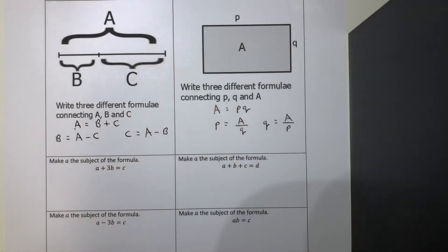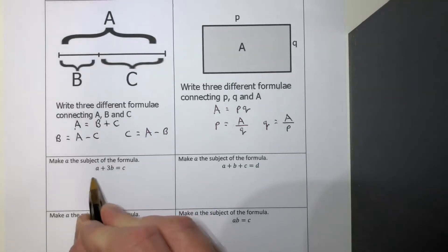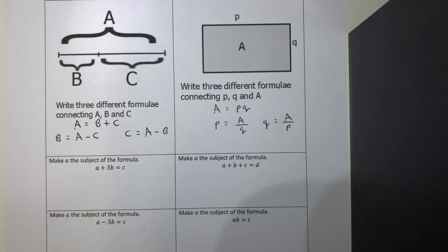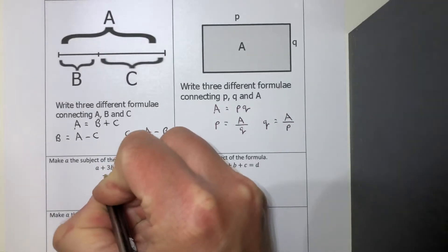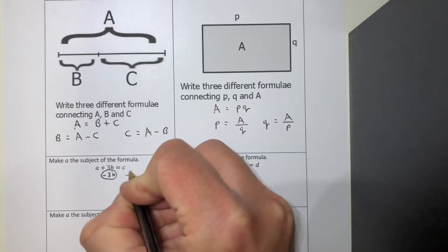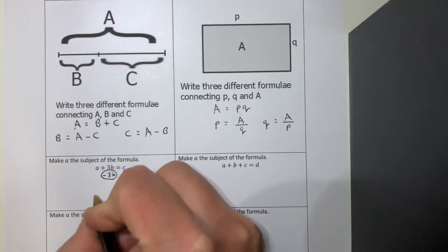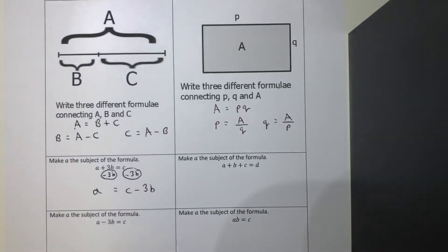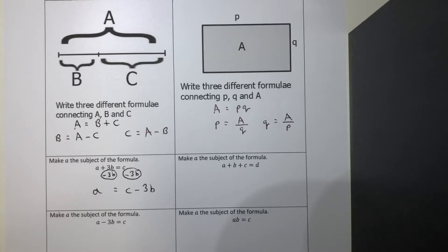All we need to do is use everything we've done with equations and rearrange. We want a on its own. Currently we've got a plus 3b, so we've got to get rid of that 3b. We take away 3b - I'll write it in a circle like I do with equations. Of course, doing that to the left means you've got to do it to the right as well. So the answer is a equals c minus 3b. All you've done is rearrange so another letter is on its own - it was c on the right, now it's a on the left. A is now the subject.